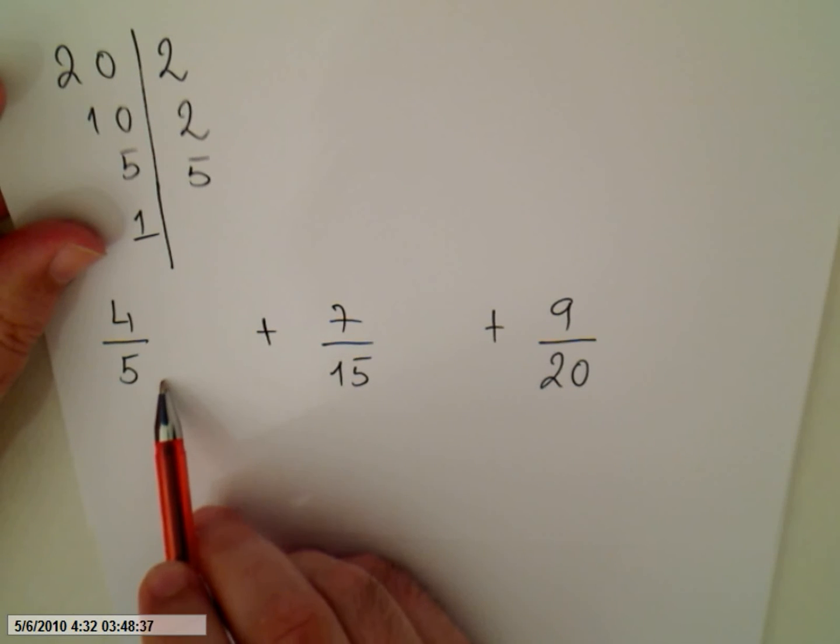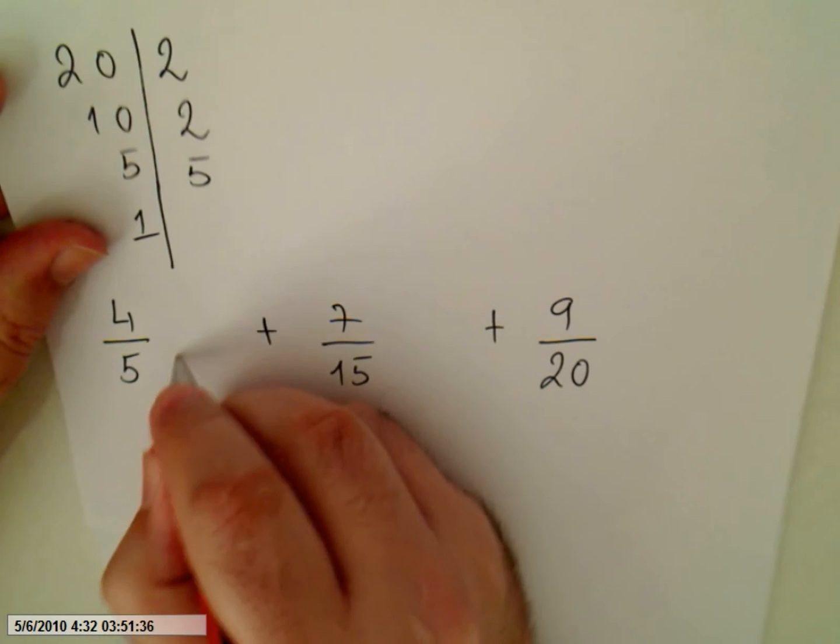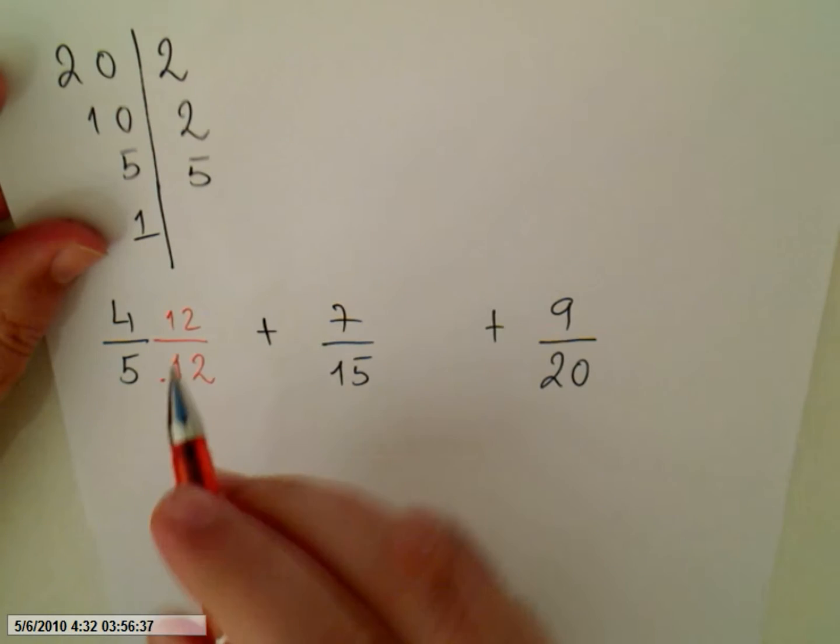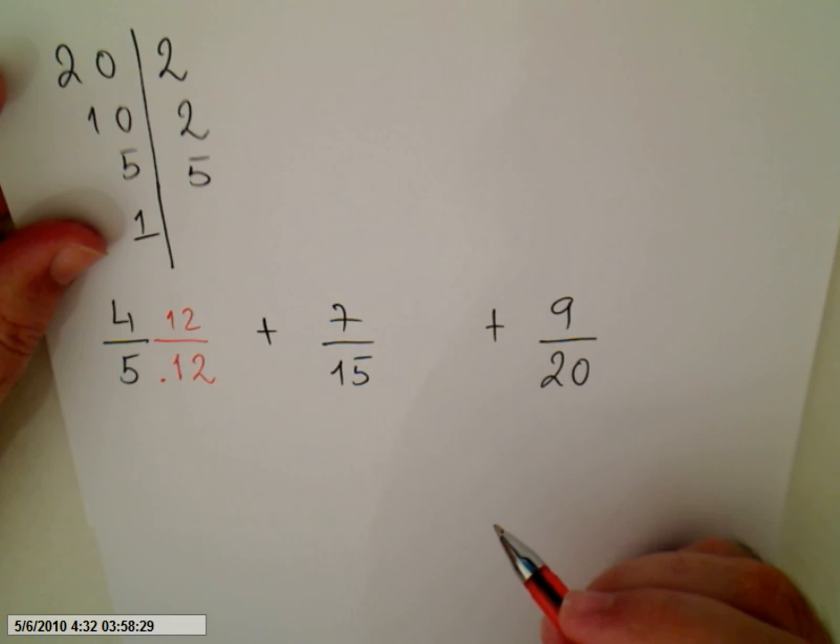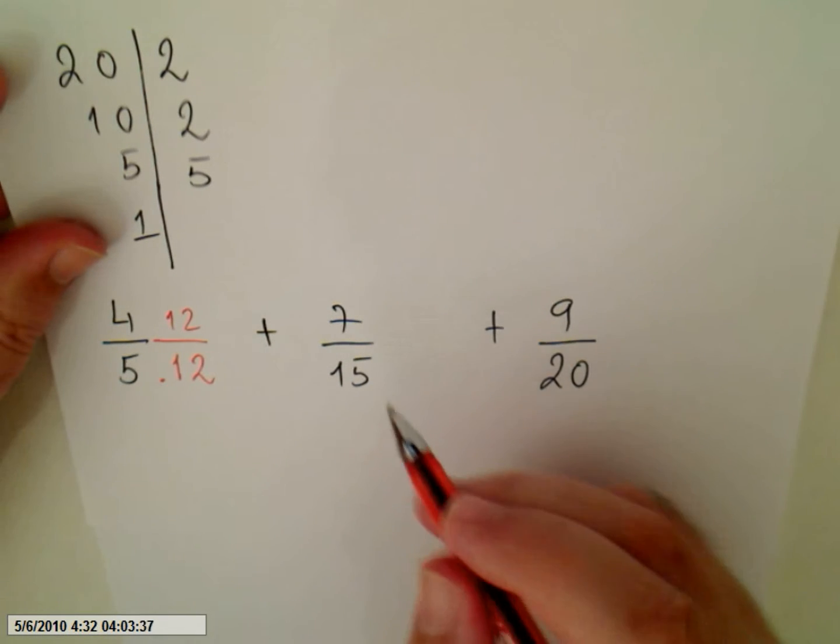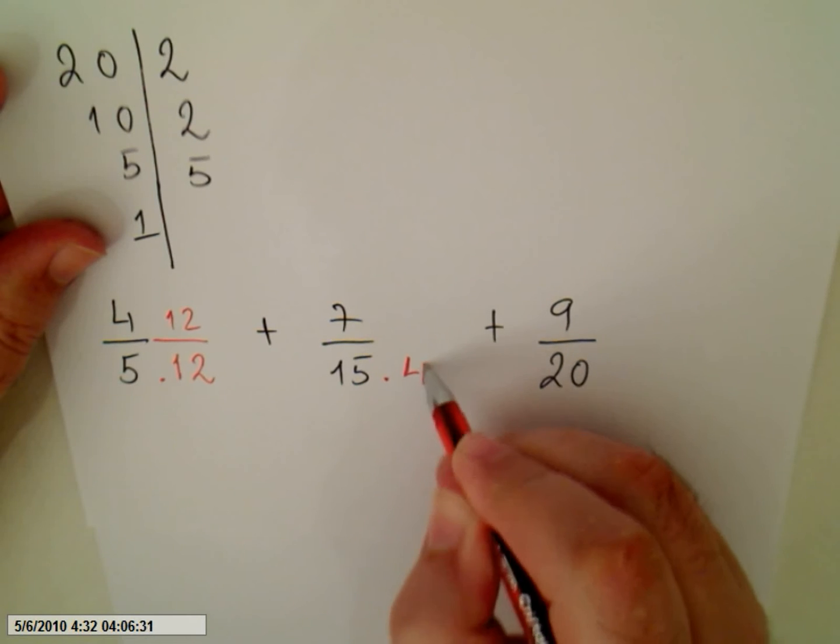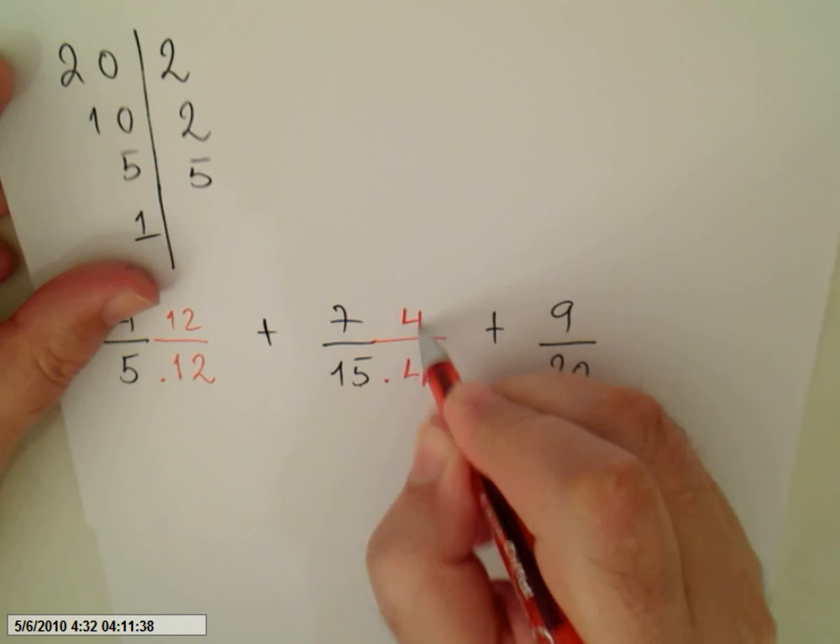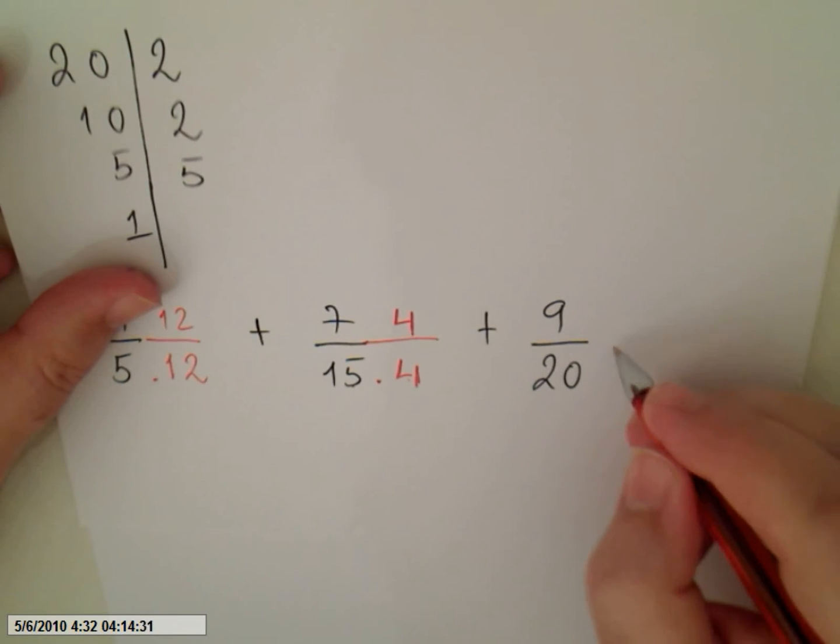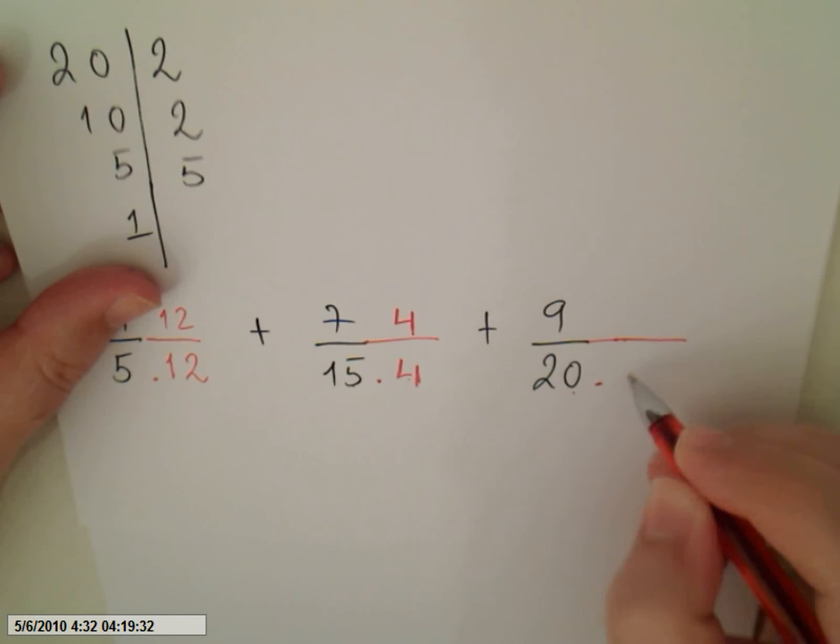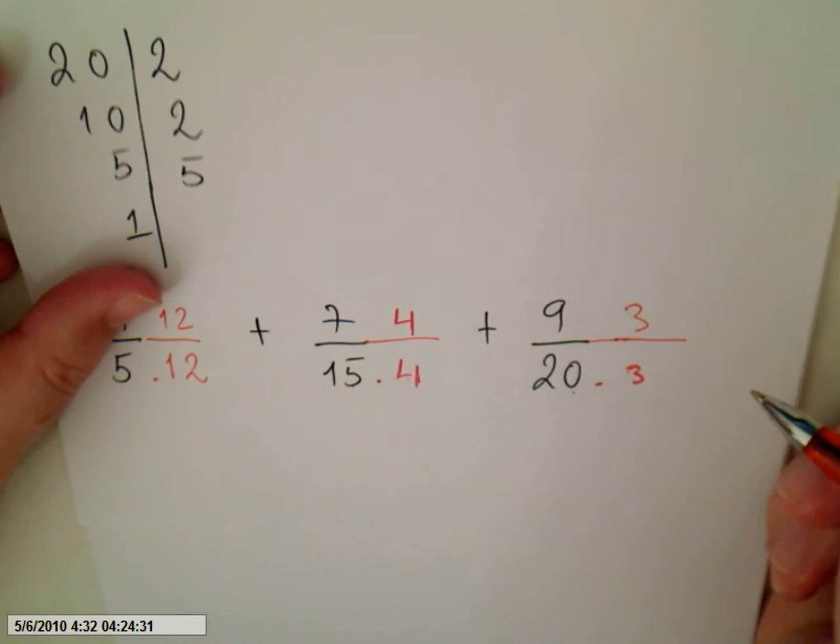So I have to multiply this number by 12. Of course I have to multiply the top by 12 too. What about this one? The common denominator is 60, so I have to multiply 15 by 4. 15 times 4 you get 60. So we have to multiply the numerator by 4 too. What about 20? Well we multiply 20 by 3 and the numerator by 3.